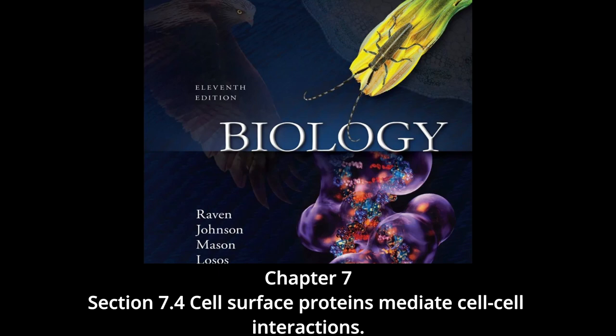Tight junctions also partition the plasma membranes of digestive tract cells into separate compartments. Transport proteins in the membrane facing the inside of the tract carry nutrients from that side into the cytoplasm, while proteins on the opposite side transport nutrients to the extracellular fluid and blood. These proteins must remain in their correct locations; tight junctions effectively segregate the proteins on opposite sides of the sheet, preventing them from drifting within the fluid membrane. When tight junctions are experimentally disrupted, just this sort of protein migration occurs.